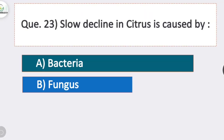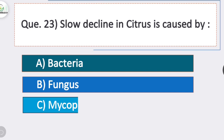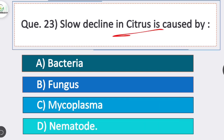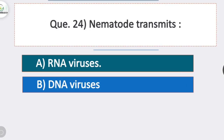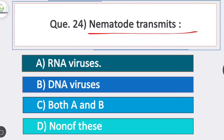Question 23: slow decline in citrus is caused by? Option D is correct — nematode. The citrus nematode Tylenchulus semipenetrans is responsible for the slow decline of citrus. Question 24: nematodes transmit which type of viruses? Option A is correct — RNA viruses.